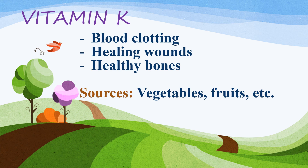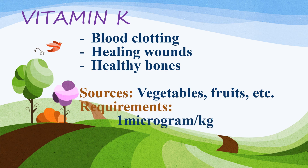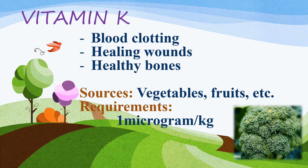Sources of vitamin K: leafy green vegetables, vegetable oils, cereal grains, and fruits. Requirements: adults need approximately 1 microgram per day of vitamin K for each kilogram of body weight — for example, a person who weighs 73 kg would need 73 micrograms per day, while a person who weighs 57 kg would need 57 micrograms per day. Deficiency occurs when fat is not absorbed properly or under certain medications — for example, certain antibiotics kill bacteria in the digestive tract that produce vitamin K. Anticoagulant drugs or blood thinners may also cause problems. Low prothrombin levels in the body lead to hemorrhage conditions.